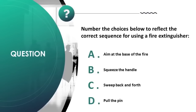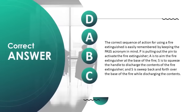Number the choices below to reflect the correct sequence for using a fire extinguisher: A) aim at the base of the fire, B) squeeze the handle, C) sweep back and forth, D) pull the pin. Correct answer is D, A, B, C.